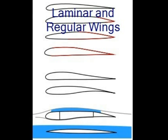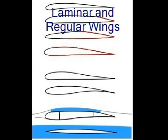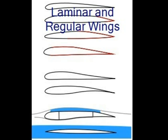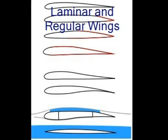The difference between the two wings occurs at where the maximum thickness of the wing is placed. On a laminar flow wing, this thickness is placed at about 50% along the distance of the chord. On a regular wing, this thickness is placed at about 25% along the distance of the chord.